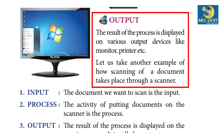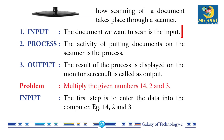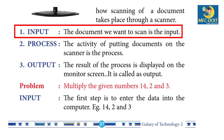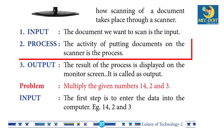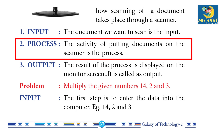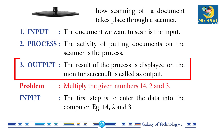Let us take another example of how scanning of a document takes place through a scanner. Input: the document we want to scan is the input. Process: the activity of putting the document on the scanner is the process. Output: the result of the process displayed on the monitor screen is called the output.